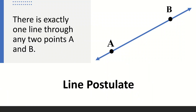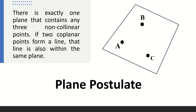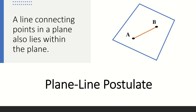First, the line postulate states that there is exactly one line through any two points A and B. Next, we have the plane postulate which states that there is exactly one plane that contains any three non-collinear points. And if two coplanar points form a line, that line is also within the same plane.